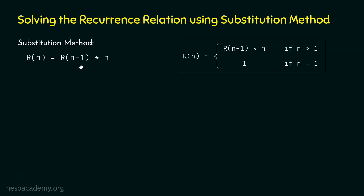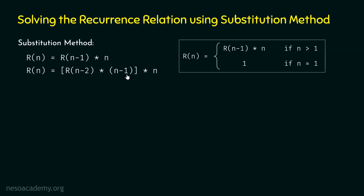Why? If you replace n by n minus 1, you will get R(n-1) on the left-hand side and R(n-2) on the right-hand side, because n minus 1 minus 1 is n minus 2. So, we will get R(n-2) × (n-1). We can substitute R(n-1) by R(n-2) × (n-1). So, the new R(n) is equal to R(n-2) × (n-1) × n. I have now written R(n) in terms of R(n-2).